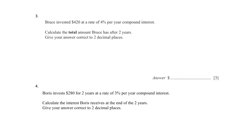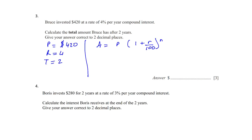Question 3: Bruce invested $420 at a rate of 4% per year compound interest. Find the total amount Bruce has after two years, correct to two decimal places. This is a three-mark question. Principal = 420, rate = 4, time = 2. Using A = P(1 + R/100)^N: A = 420(1 + 4/100)^2 = 454.27.